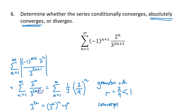I hope this video has helped you understand what to do with series that have negative terms or an alternating sign. We've used the alternating series test, and also the approach of taking the absolute value of the terms to determine absolute or conditional convergence.